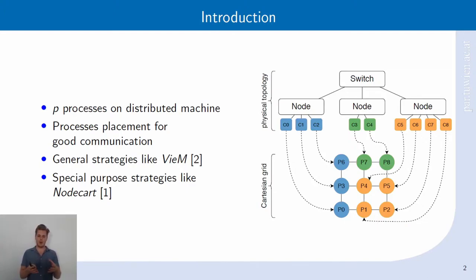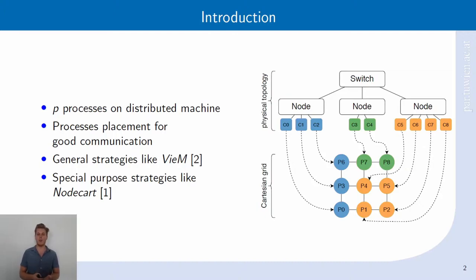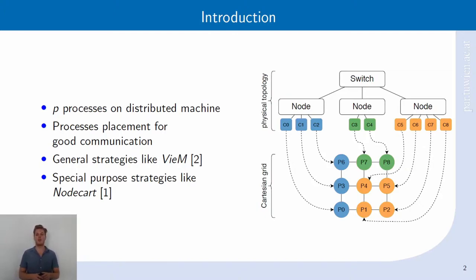The more local the processes are, the better it is for the communication performance between those two processes. With P processes, we would ideally want to find a mapping onto the distributed machine such that the overall communication performance is maximized.